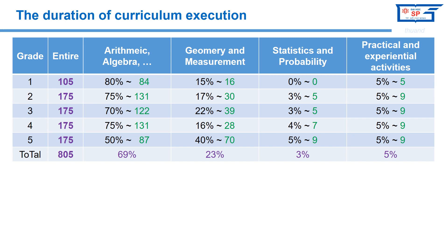Statistics and probability increases to 4% in grade 4 and 5% in grade 5. The contents of numbers and algebra account for a large proportion: about 80% in grade 1, about 75% in grades 2 and 4, and about 70% in grade 3 and 50% in grade 5.